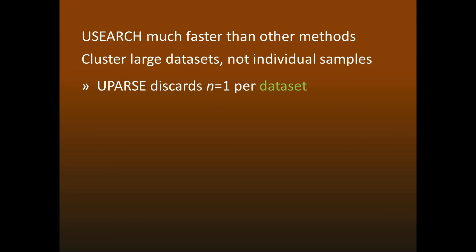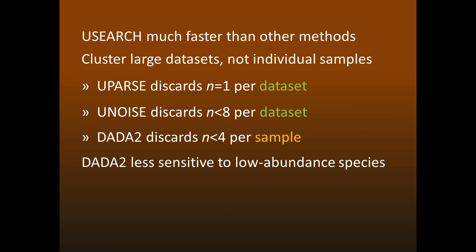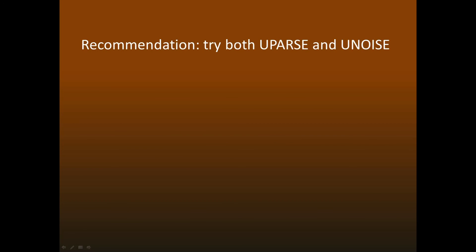Sequence abundances are determined across the entire data set rather than individual samples. UPARSE discards singletons per data set and UNOISE discards sequences with abundances less than 8 per data set. While DADA2 discards sequences with abundances less than 4 per sample. This means that in most cases DADA2 is much less sensitive to low-abundance species. I believe that the best approach is to analyze diversity using both UPARSE and UNOISE and check if the results are consistent.